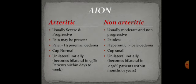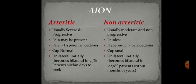Here are differential points between the two types. Arthritic AION is usually severe and progressive; pain may be associated; the disc is pale; the cup is normal; it is initially unilateral but becomes bilateral in 95% of patients within days to weeks. Non-arthritic AION is usually moderate and non-progressive; it is painless; the disc is hyperemic; the cup is small; it is initially unilateral but becomes bilateral in less than 30% of patients within months or years.